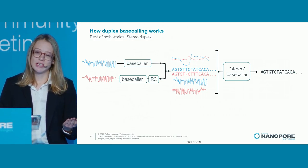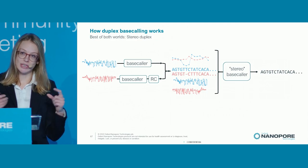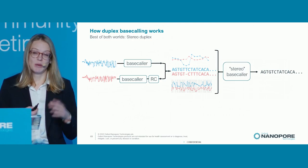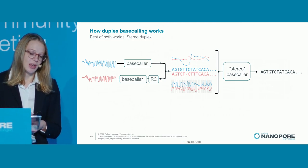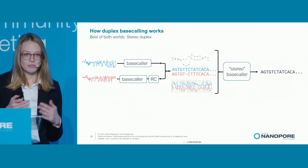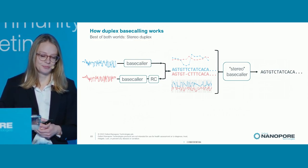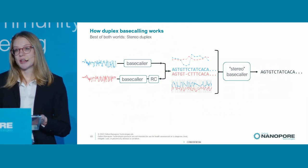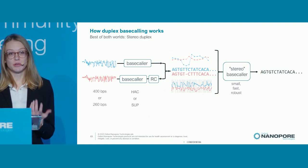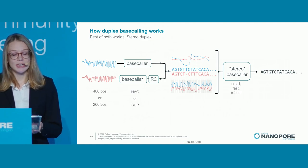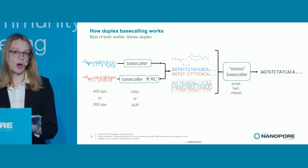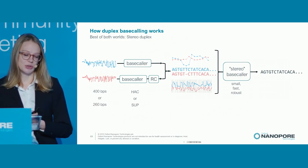Just as we performed a reverse complement to align the sequences to each other, we also do some preprocessing to align the signals to each other before feeding into the base caller. In particular, we use the segmentation information from the first round base call to do the signal alignment. Because the stereo base caller receives such rich input information, it can be very small and therefore very fast — about the size of a fast base caller model, which is much smaller than the typical HAC or SUB base caller models we'd use.